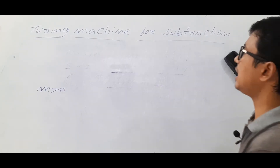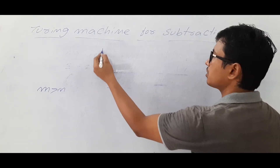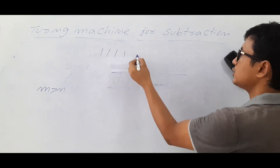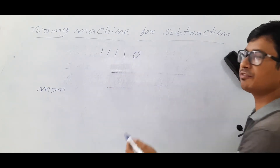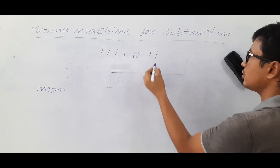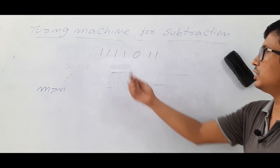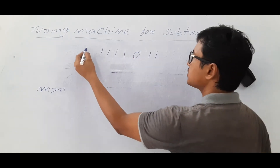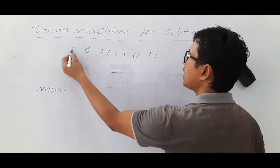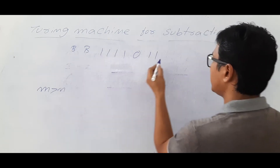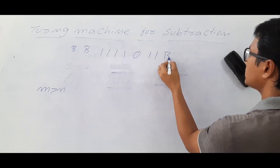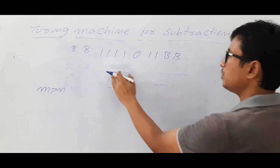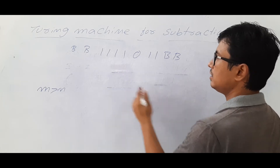Let's take m value as 4 and n value as 2. I will differentiate both inputs with a 0, so this is m and this is n, and I will have blank symbols on the left-hand side and right-hand side of the string.